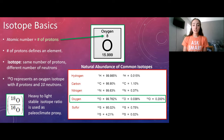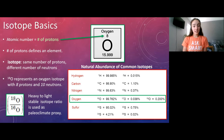Oxygen-17 must have eight protons and nine neutrons, and oxygen-18 must have eight protons and ten neutrons. Oxygen-18 and oxygen-16 are the most abundant stable isotopes, so we use the ratio of oxygen-18 to oxygen-16 to study their movement throughout different systems on Earth.